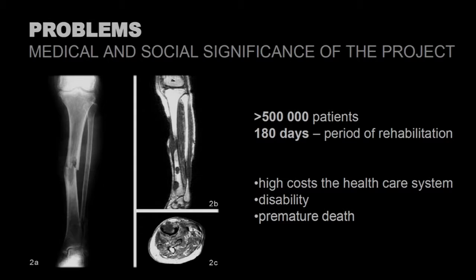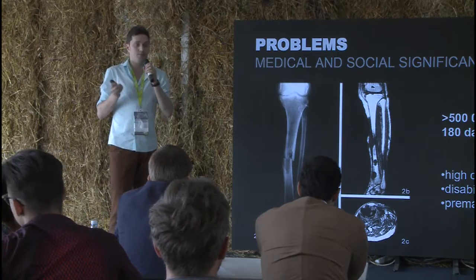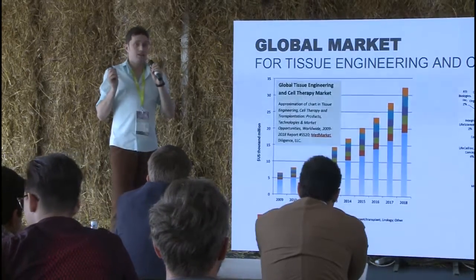But we see many people in cast — people are disabled for many months. There are many patients like that, more than half a million, because the bone is a very complicated biological structure. It regenerates very slowly — several months, sometimes years. Big defects are not filled with bone tissue at all, and the only way out is to use bone replacement.